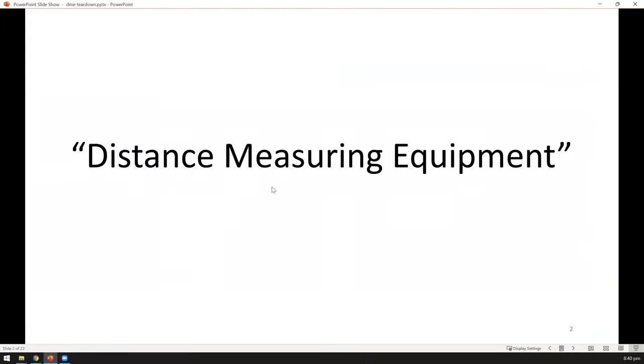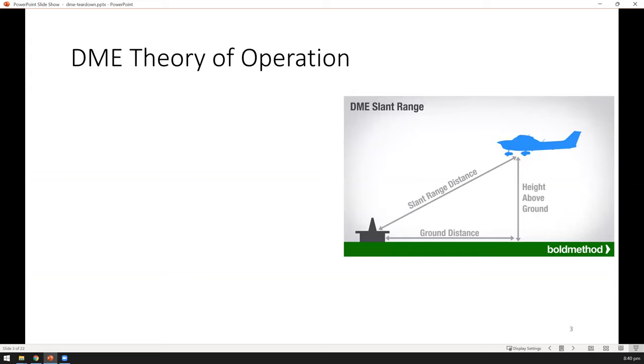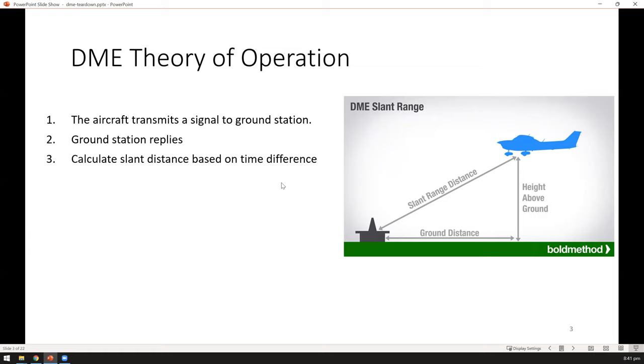DME stands for distance measuring equipment. As the name suggests, it's to measure distance. This equipment is installed on an aircraft. So you want to find a distance to a certain ground station. This is how it works: the aircraft first transmits a signal to the ground station, then the ground station will reply back. Based on the time difference between when it sends out the signal and when it receives, this DME equipment can determine how far the aircraft is from this particular station.